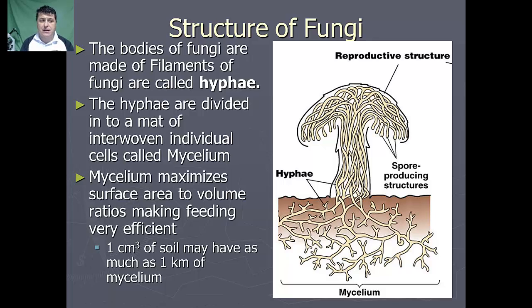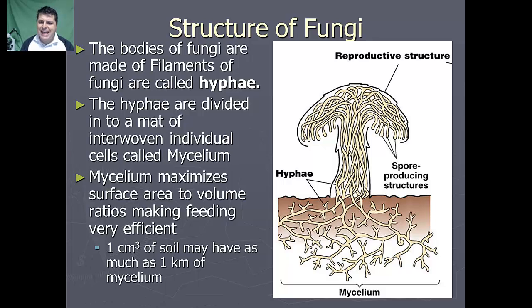The body of fungi are made up of filaments called hyphae. The hyphae are divided into a mat of individual interwoven cells called mycelium. The mycelium is going to maximize the surface area to volume ratios, making feeding very efficient. In fact, one cubic centimeter of soil may have as much as one kilometer of mycelium in it.